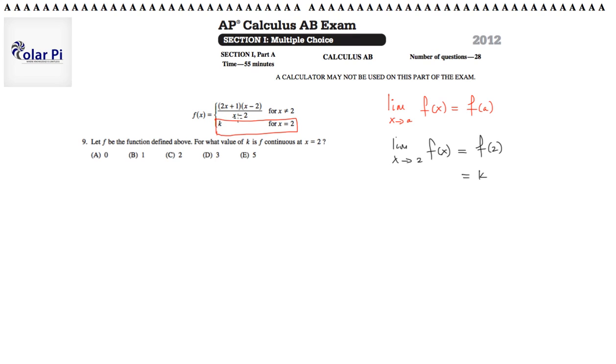But on the other hand, we need to calculate the limit as x goes to 2. Now, it clearly doesn't make sense to use this bottom piece again. So I'm going to evaluate the limit using the top piece.